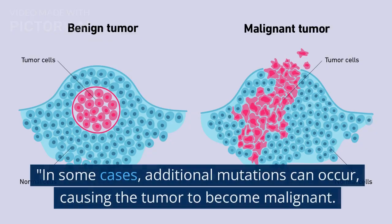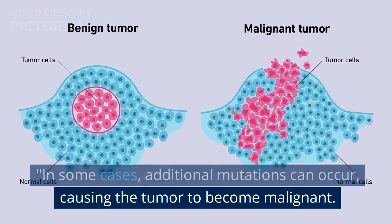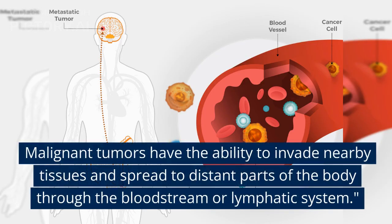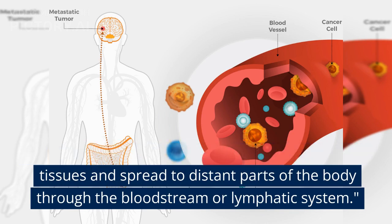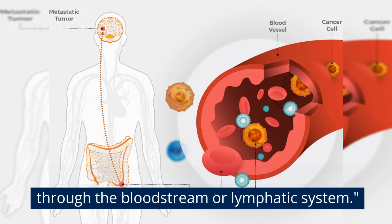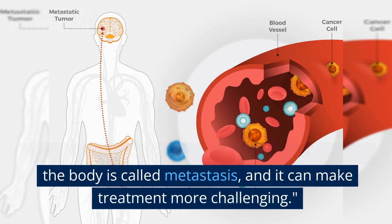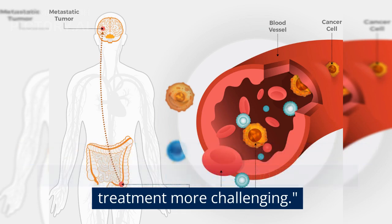In some cases, additional mutations can occur, causing the tumor to become malignant. Malignant tumors have the ability to invade nearby tissues and spread to distant parts of the body through the bloodstream or lymphatic system. This process of cancer spreading to other parts of the body is called metastasis, and it can make treatment more challenging.